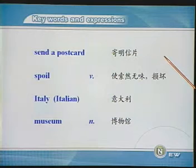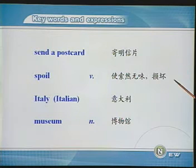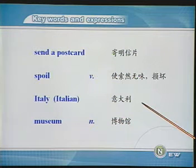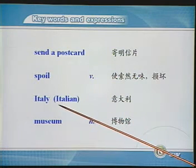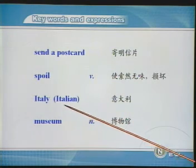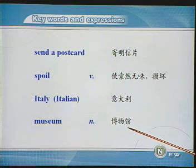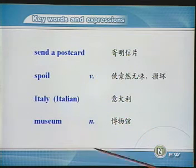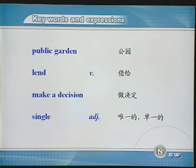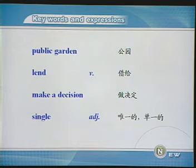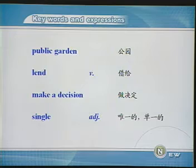Send a postcard. Spoil. Italy — 它的形容词形式是 Italian. Museum. Public garden. Land. Make a decision. Single.